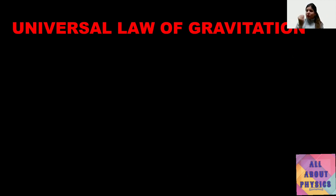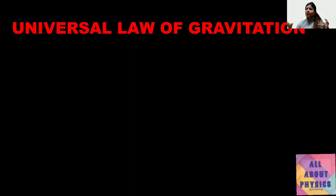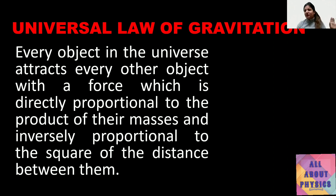Why is Newton's law called the Universal Law of Gravitation? Because this law is applicable everywhere — it is universally accepted. We can apply it to heavenly bodies like the Earth-Sun system, the Earth-Moon system, the apple-Earth system, and even between two objects lying on the surface of Earth. This is why it is called the Universal Law of Gravitation.